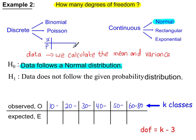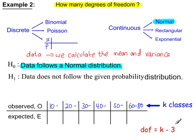Example 2: if from the given data we have calculated the mean and the variance, we're no longer assuming those two values. So in H0, we state the data follows a normal distribution, with no mention of the mean and variance because we calculated them in our working out. This means we now use k minus 3 degrees of freedom — it was k minus 1, now it's k minus 3, because of those two additional calculated quantities.